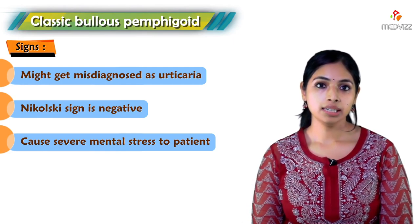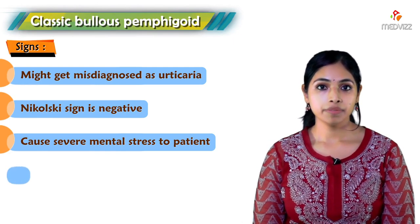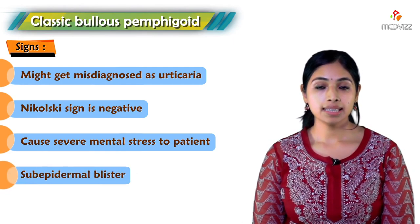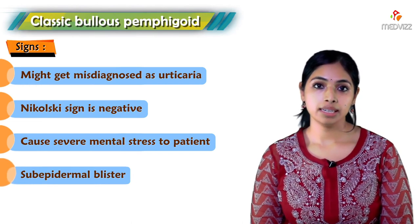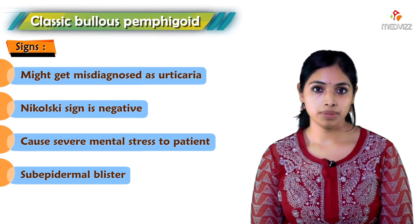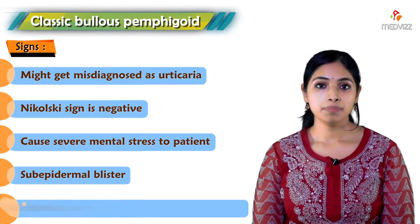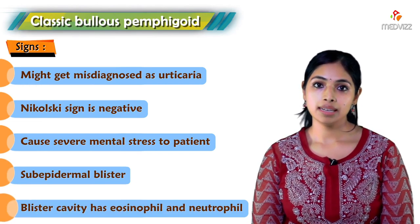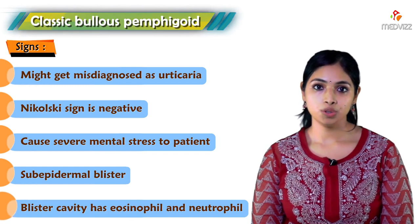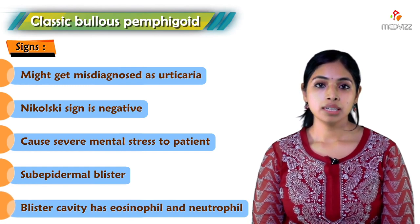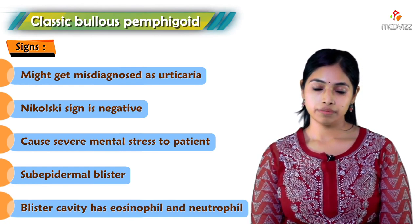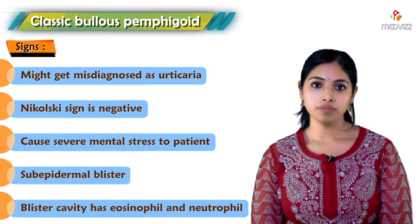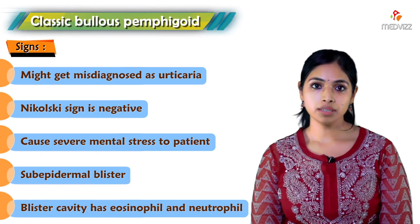Histopathologically, in bullous pemphigoid we see a sub-epidermal blister rather than an intra-epidermal blister. The blister cavity contains eosinophils and neutrophils, and there is also perivascular inflammatory infiltrate with eosinophils and neutrophils.